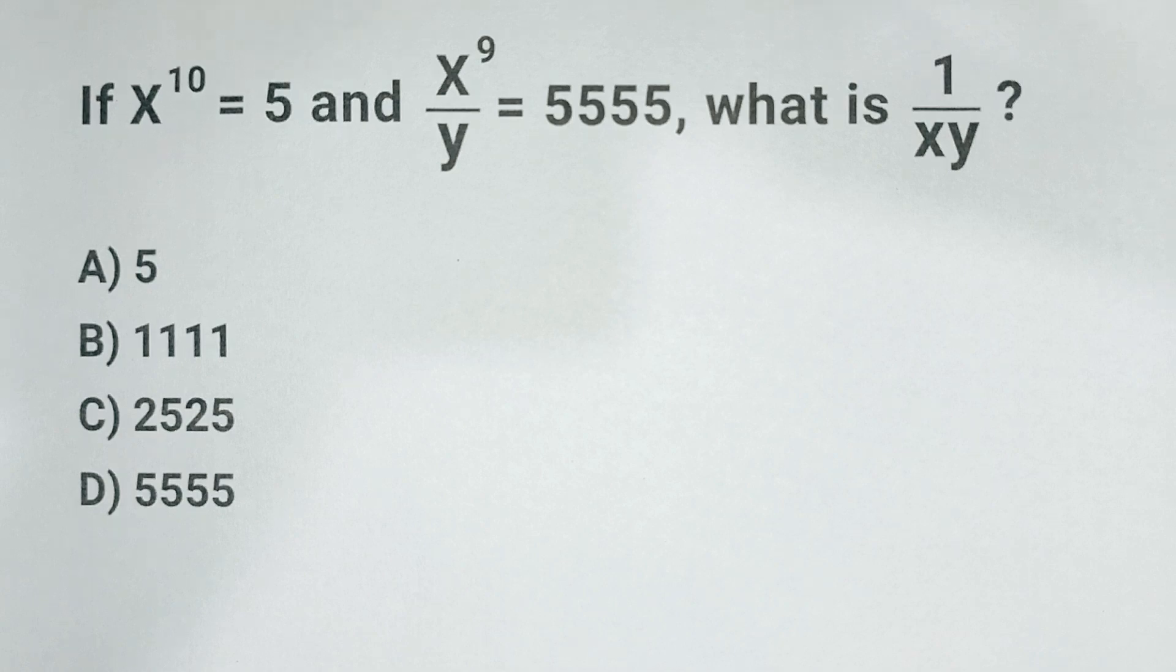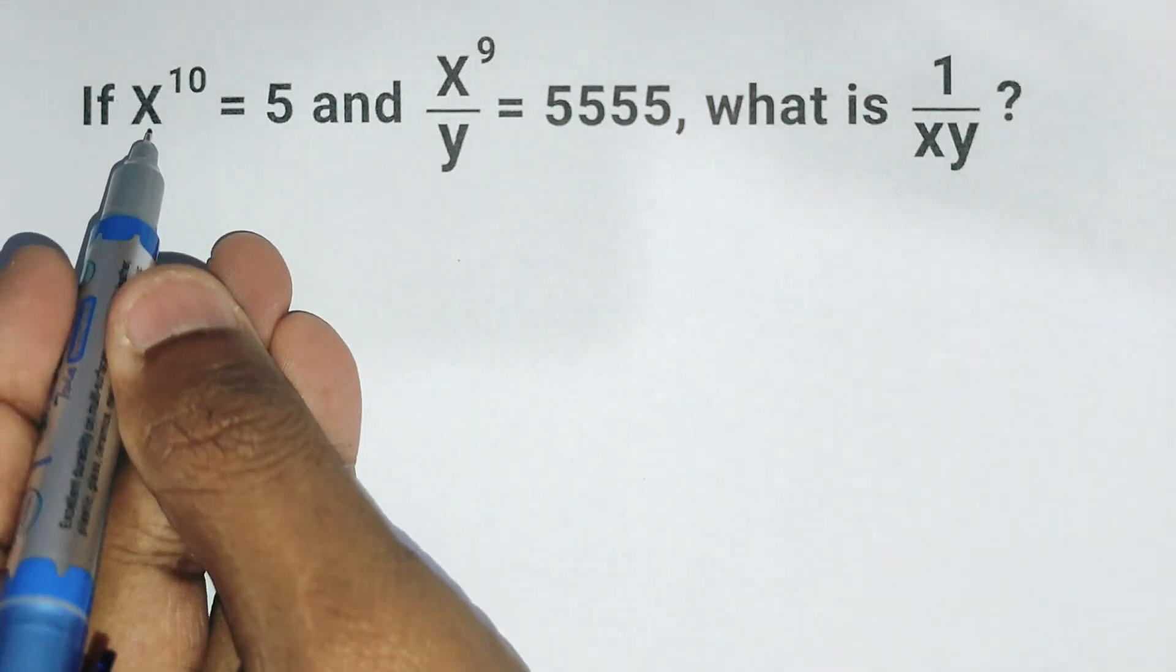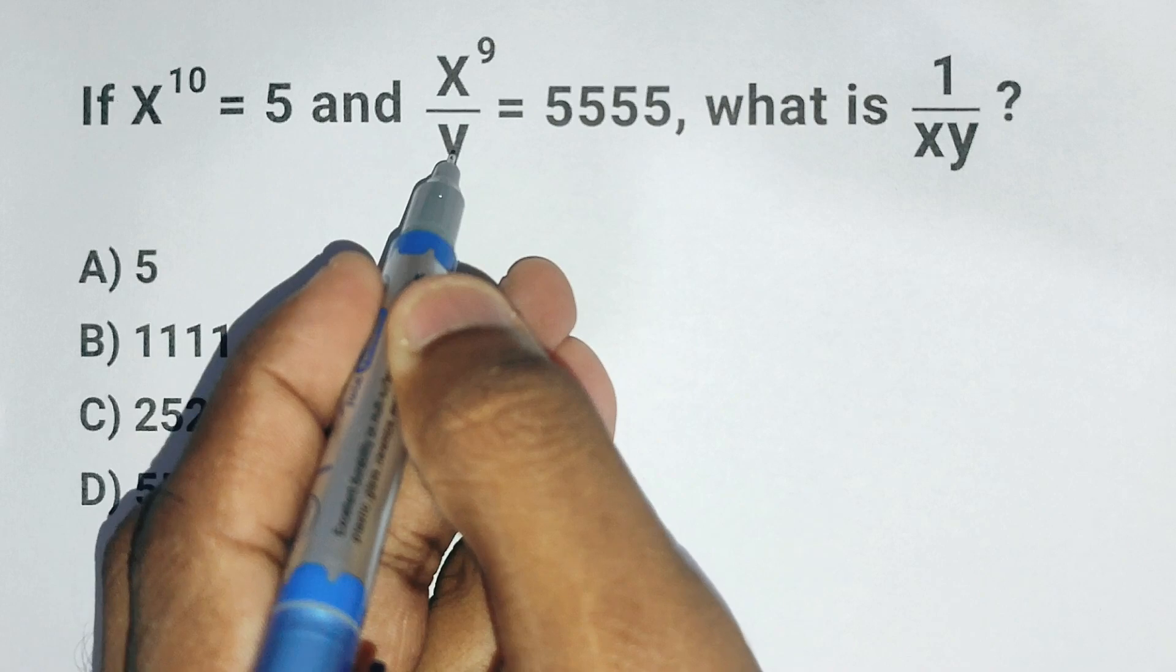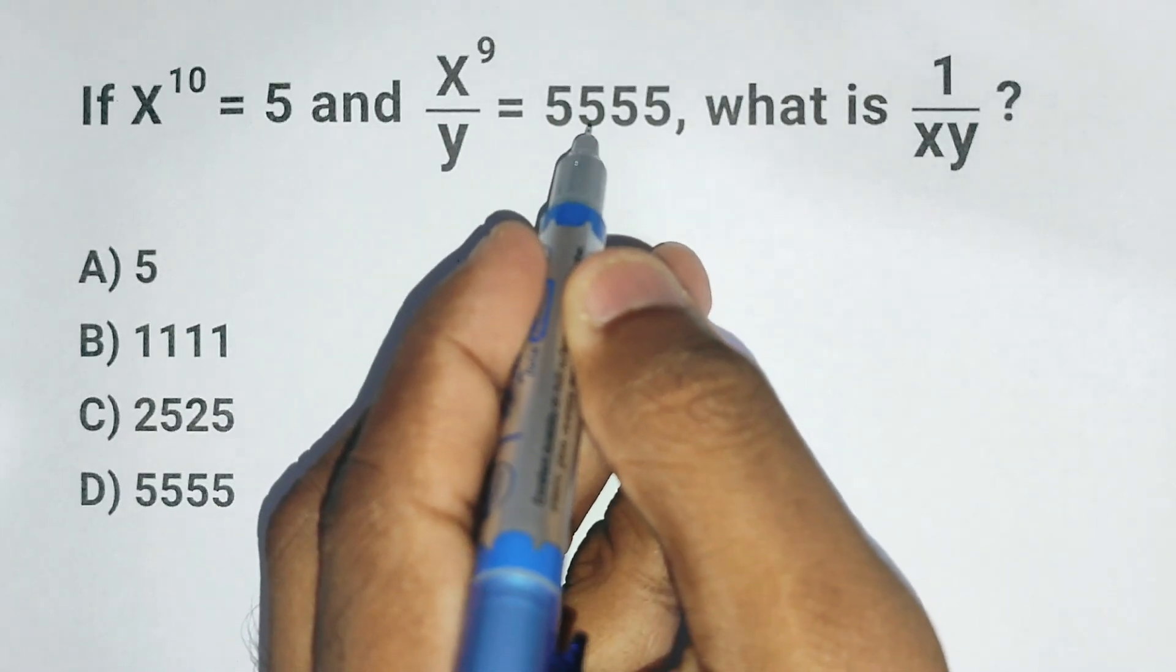Here's a quick brain twister that only the sharpest minds can solve in 15 seconds. You are given that x to the power of 10 equals 5 and x to the power of 9 divided by y equals 5555.